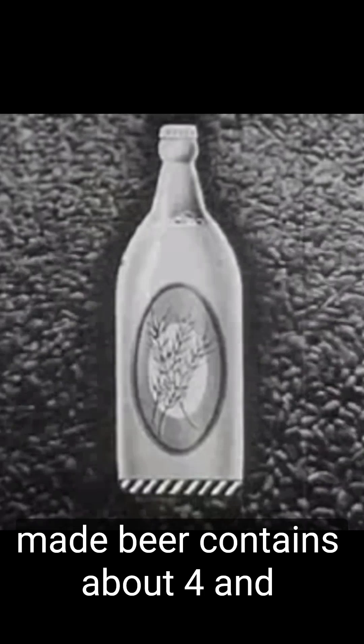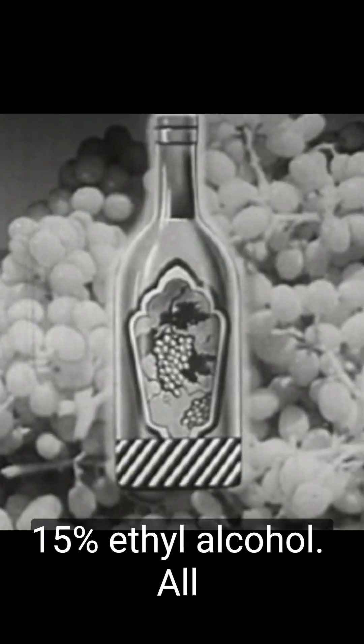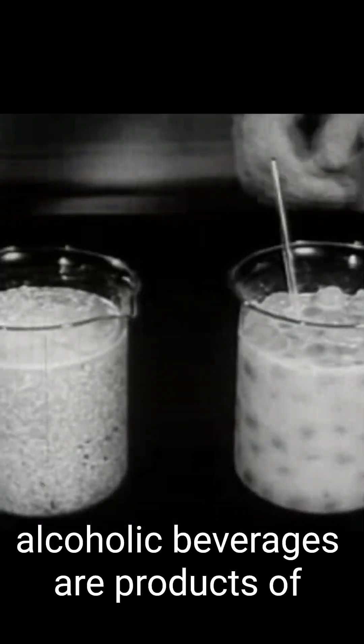Carbohydrates such as starch or sugar, and cereal grains, are the raw materials commonly used in making alcoholic beverages. Beer is usually made with about 4.5% ethyl alcohol. Wine contains 15% alcohol. All alcoholic beverages are products of fermentation.